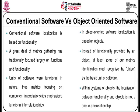In object oriented software, localization is based on objects. Instead of functionality provided by an object, at least some of the metrics identification must recognize the object as the basic unit of software. Within a system of objects, the localization between functionality and objects is not a one-to-one relationship.